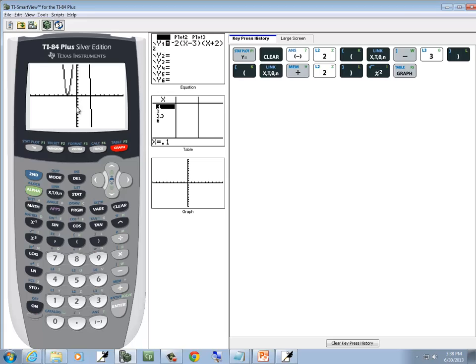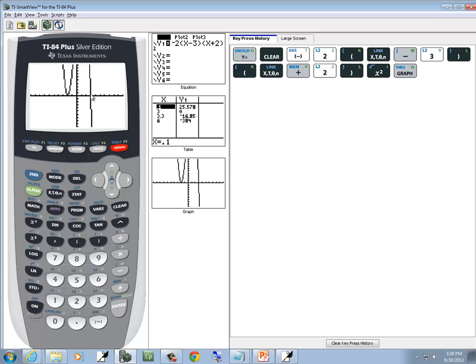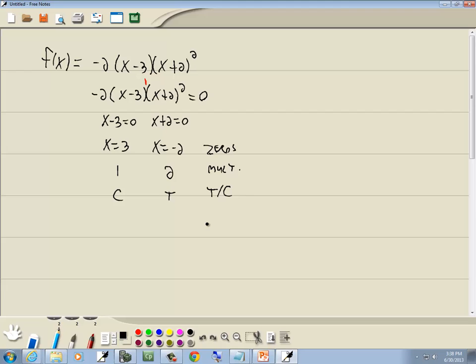And you can see at negative 2, it touches, which is what we just said. And at 3, it just goes directly and crosses the x-axis. So those would be your answers.